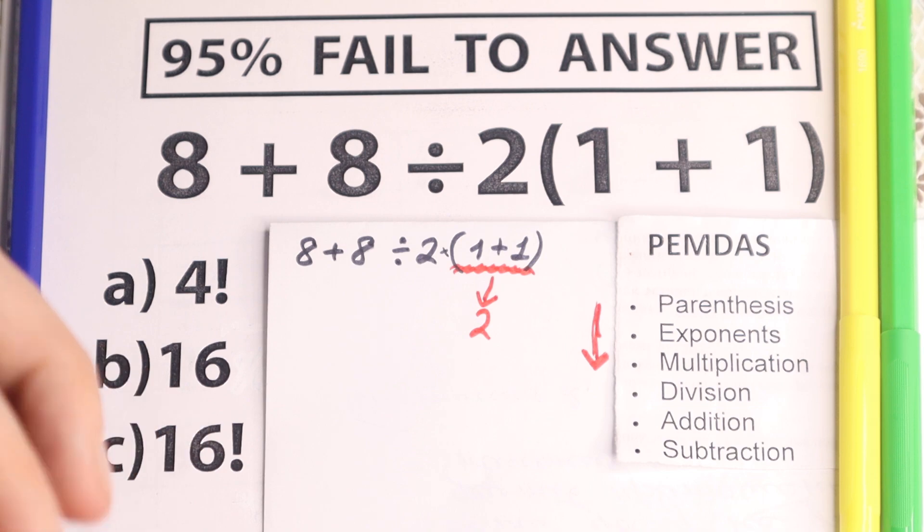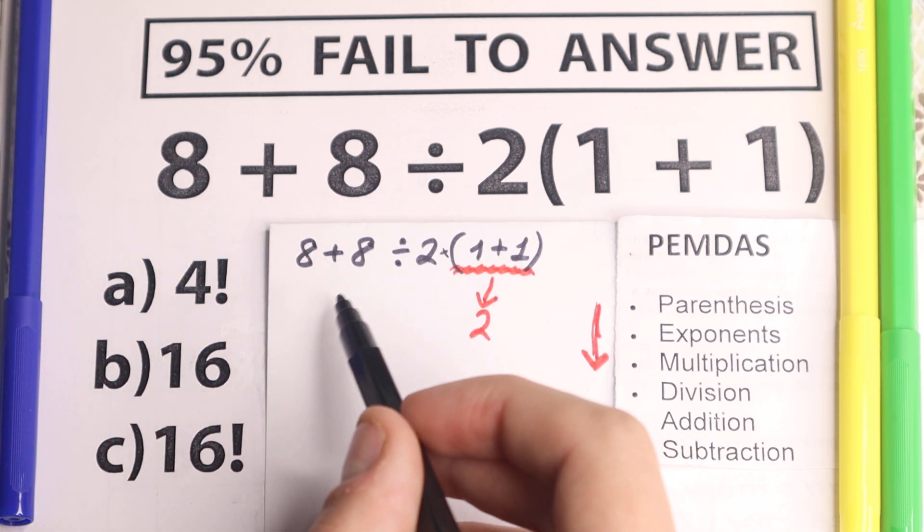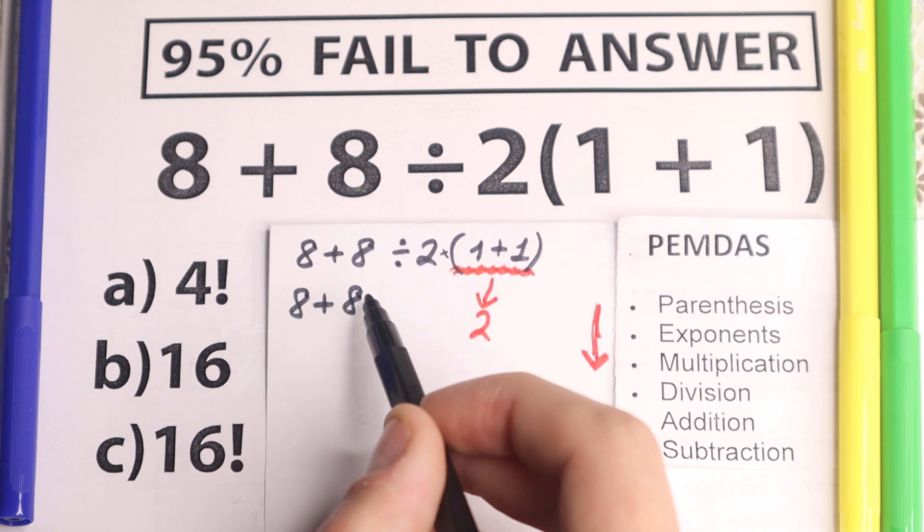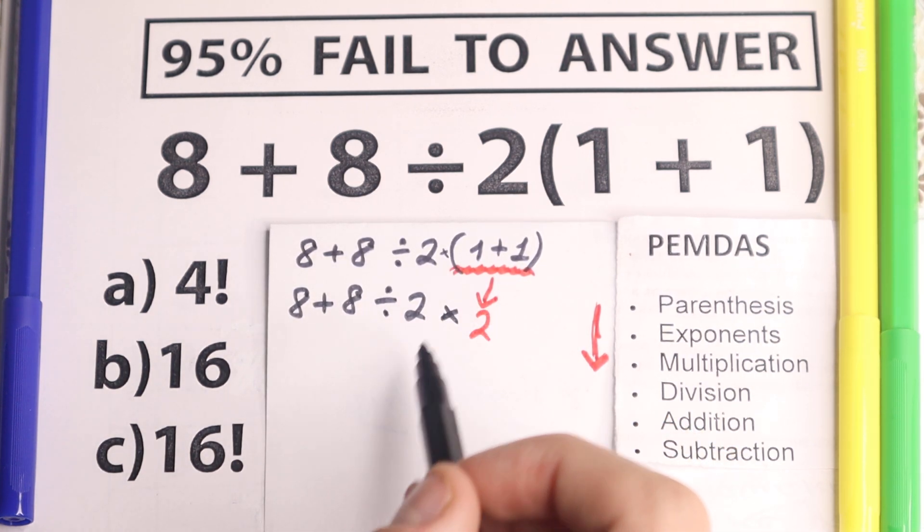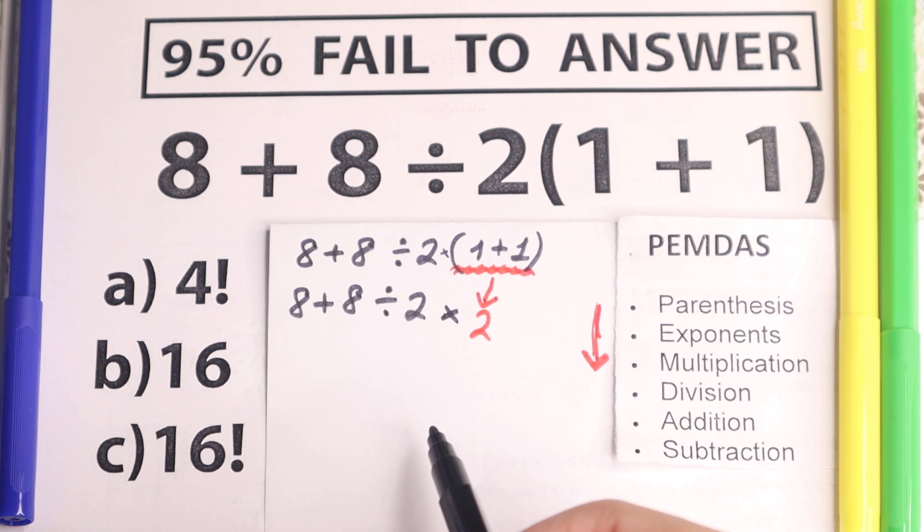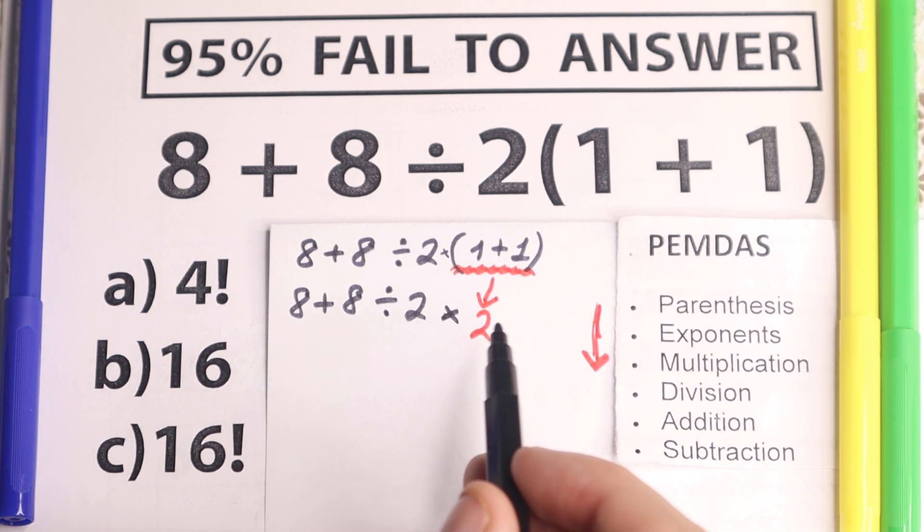This is our first step and I'll just rewrite this problem from the beginning. So 8 plus 8 divided by 2 times 2. From this question we have right now this one. Let's go next. We don't have parentheses anymore, so let's go next.